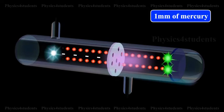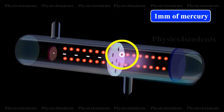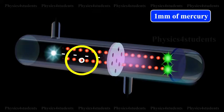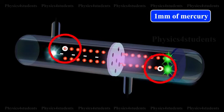Goldstein called them Canal Rays, since they passed through and emerged from the holes in the cathode in straight lines, opposite to the direction of the cathode rays.